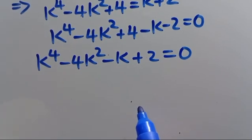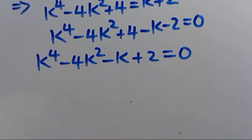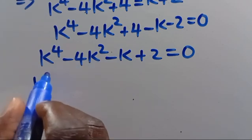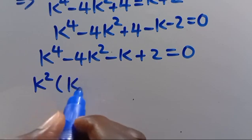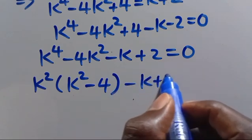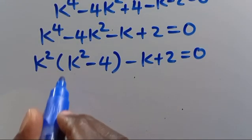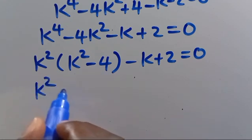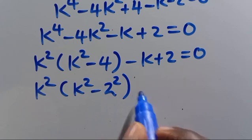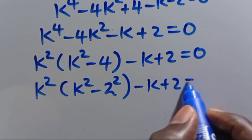From here, we factor by grouping. What is common between k⁴ and -4k² is k². So we have k²(k² - 4) minus (k - 2) = 0. Notice that k² - 4 can be written as k² - 2².